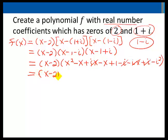So I have x minus 2 times x squared minus 2x plus 1 minus i squared.